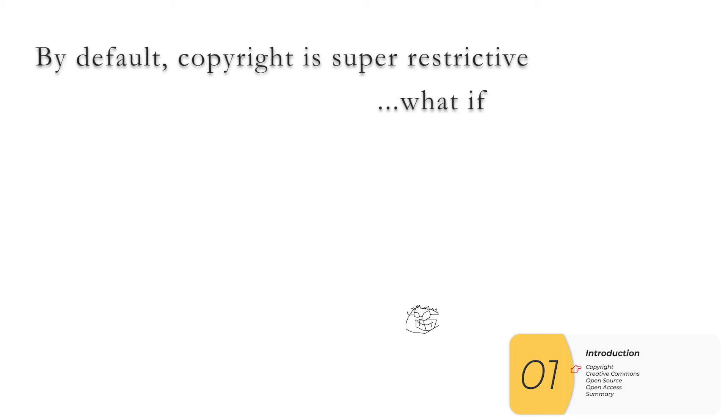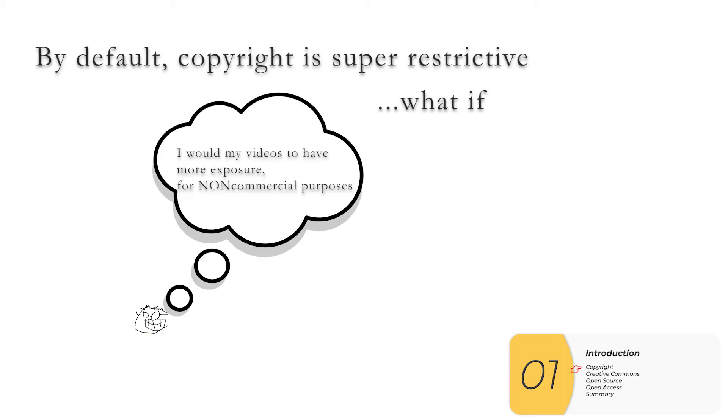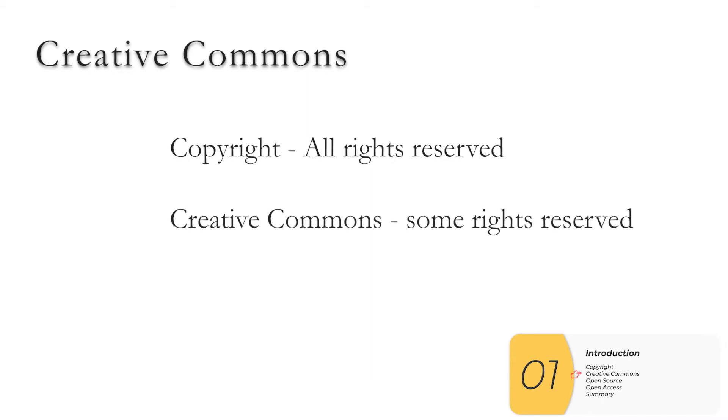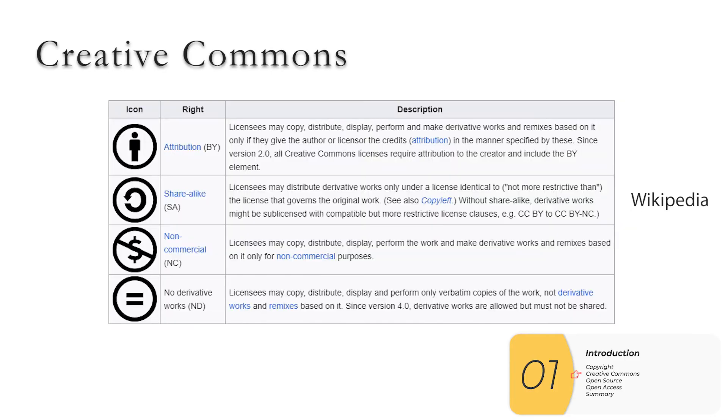But what if I wanted to be a little bit less restrictive? Maybe I want to let people use my videos as long as they're not making money. This is where Creative Commons comes in. So whereas copyright is all rights reserved, Creative Commons can be thought of as some rights reserved. And which rights are those? Well, Wikipedia lists them here. Attribution just means you have to credit somebody. Non-commercial means you can't make money. These are probably the most common ones.